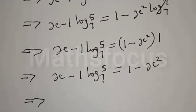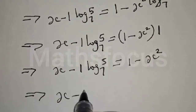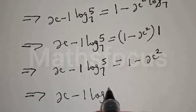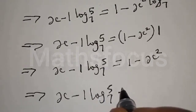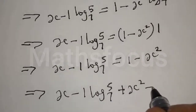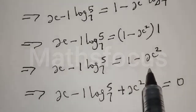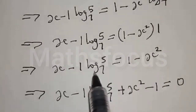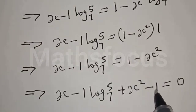Let's equate it to 0. We have x minus 1 times log base 7 of 5 plus x squared minus 1 equal to 0. Moving terms: x minus 1 times log base 7 of 5 plus x squared minus 1 equals 0.